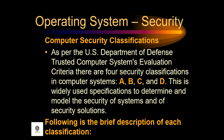Regarding computer security classifications, as per the U.S. Department of Defense Trusted Computer Systems Evaluation Criteria, there are four security classifications in computer systems: A, B, C, and D. These specifications are used to determine and model the security of systems and security solutions.